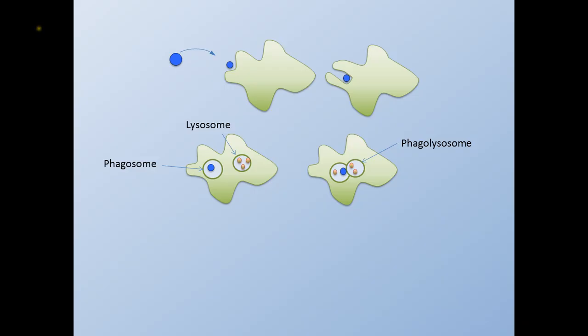The enzymes and reactive oxygen particles will kill and degrade the antigen into pieces. The phagocyte will digest much of the antigen and any remaining fragments will be released via exocytosis.